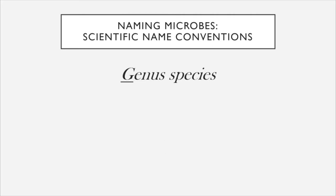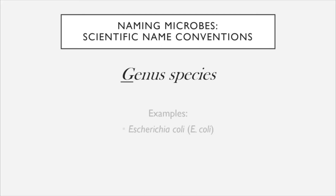When we name microbes, we adhere to this same convention. We name the microbe first with its genus and then its species. Both of these words should be italicized, and the genus should be capitalized but not the species. Let's take a look at some examples of microbes named with this convention.